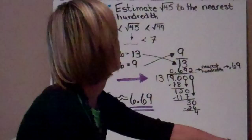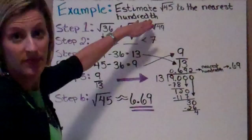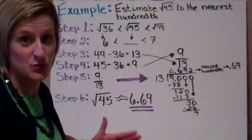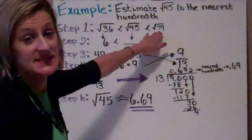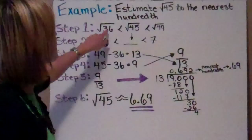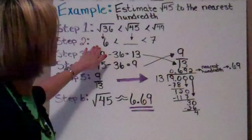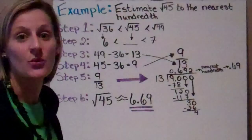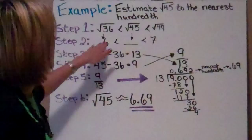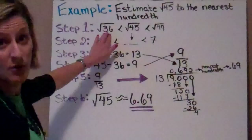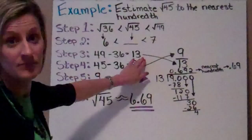Another example. We're going to estimate the square root of 45 to the nearest hundredth. Again, step 1: find the two perfect squares that are between those two numbers. The smallest one is going to be 36, the largest is 49. Step 2 is to find the square roots of those perfect squares. The square root of 36 is 6 and the square root of 49 is 7. So that means my number is going to be between 6 and 7 — 6 point something. Now I'm going to take the largest perfect square and subtract the smallest: 49 minus 36 is 13. That is step 3 and that's my denominator.